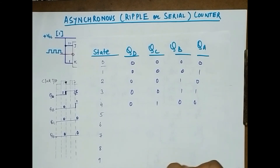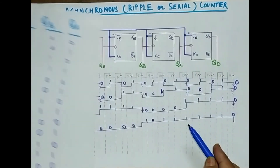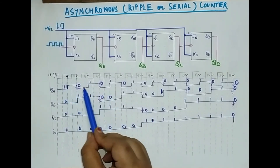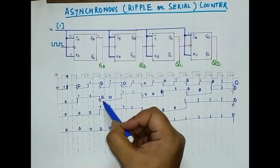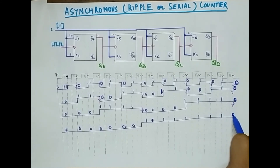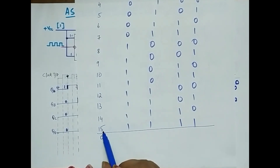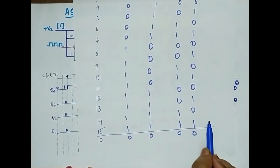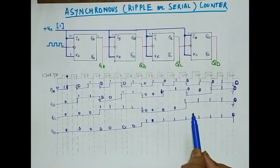This is the table you should get. In the timeline diagram you can see QA alternates 0,1,0,1,0,1 and similarly for the other outputs in proper sequence. After the 15th state, in the 16th state all QA, QB, QC, QD go back to 0,0,0,0 — meaning the counter repeats. So we count only up to 15, then it returns to 0,0,0,0. This is how you design a simple ripple serial asynchronous counter. Thank you for watching the video — if you have any suggestions or doubts you can put them in the comment section.